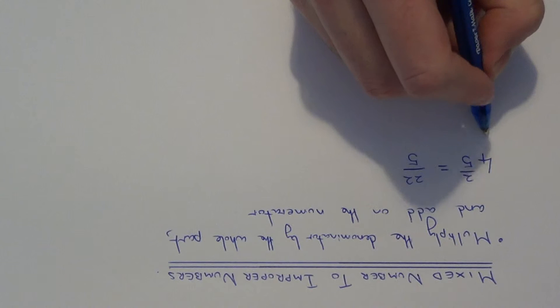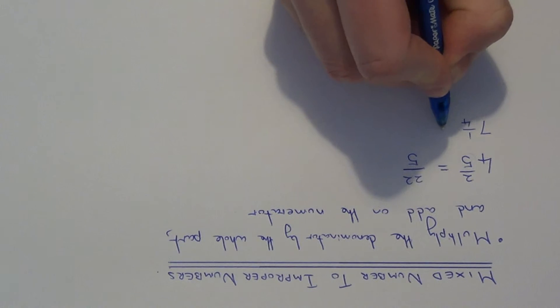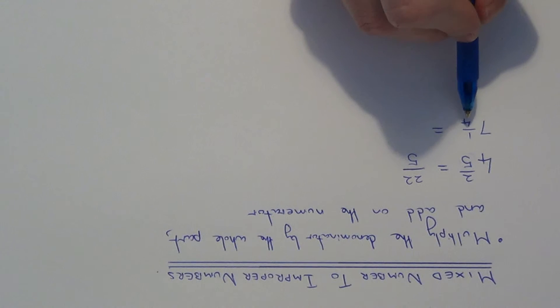Let's do another one. This time let's go with 7 and 1 quarter. So again, all you need to do is multiply the denominator by the whole part and add on the numerator.